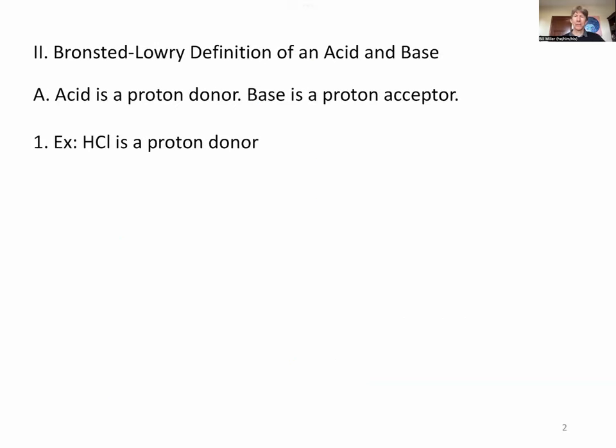In the Bronsted-Lowry definition, an acid is a proton donor, and a base is a proton acceptor, where a proton is H-plus, also called a hydrogen ion. For example, if you take a hydrogen atom, it has one proton plus one electron. Take away that electron to get an H-plus, and you get just a proton. This is going to be a more expansive definition, meaning more things will qualify as acids, but everything that was an acid from Gen Chem 1 is still an acid, and everything that's a base is still a base.